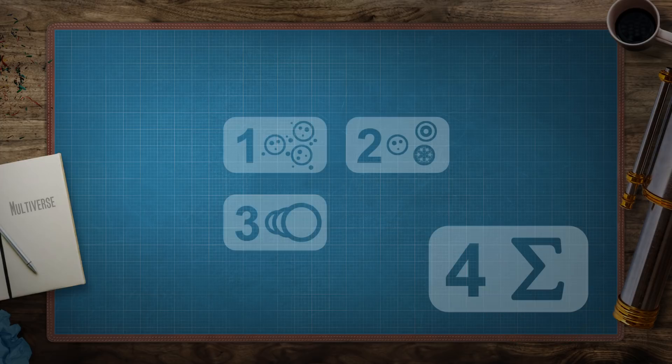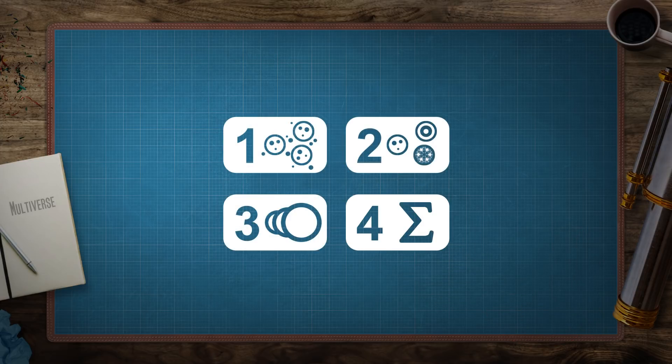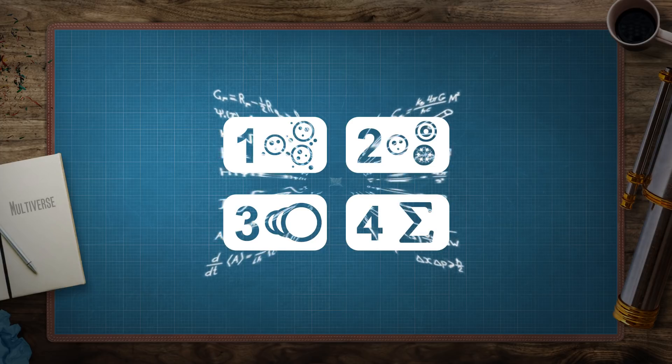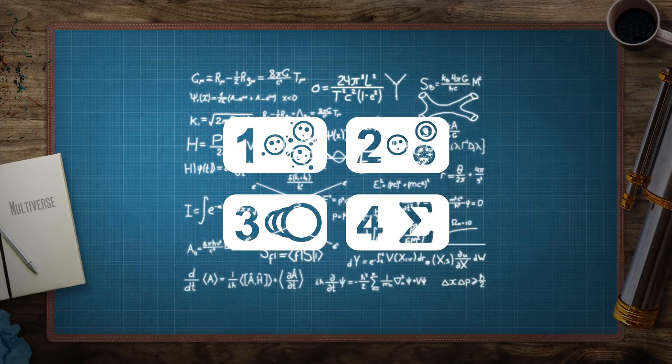In the end there is also the idea of a level 4 multiverse, dealing with the fact that something exists at all. It combines all previous types and says abstract mathematics itself is real. And all that it can express is a reality in some way.